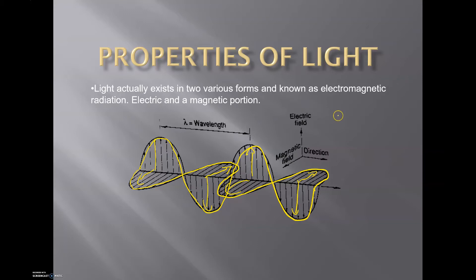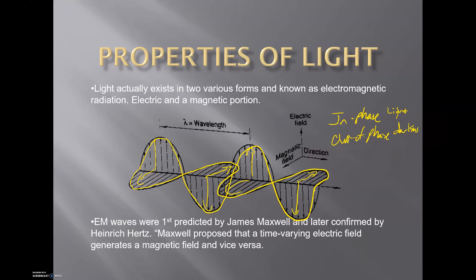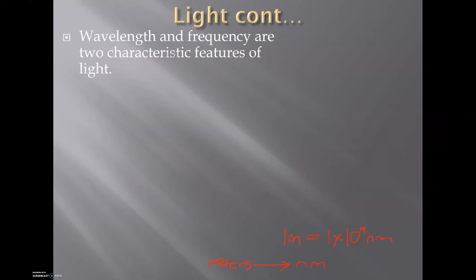When we dive into the physics of light, we have what is called in-phase and out-of-phase. This is explained by the propagating waves of light. In-phase is what you see shown on this slide; out-of-phase is when the electric and magnetic portions are out of sync, and you see darkness. So in-phase you see light, out-of-phase you see darkness. Electromagnetic waves were first predicted by James Maxwell and later confirmed by Heinrich Hertz. Maxwell proposed that a time-varying electric field generates a magnetic field and vice versa.